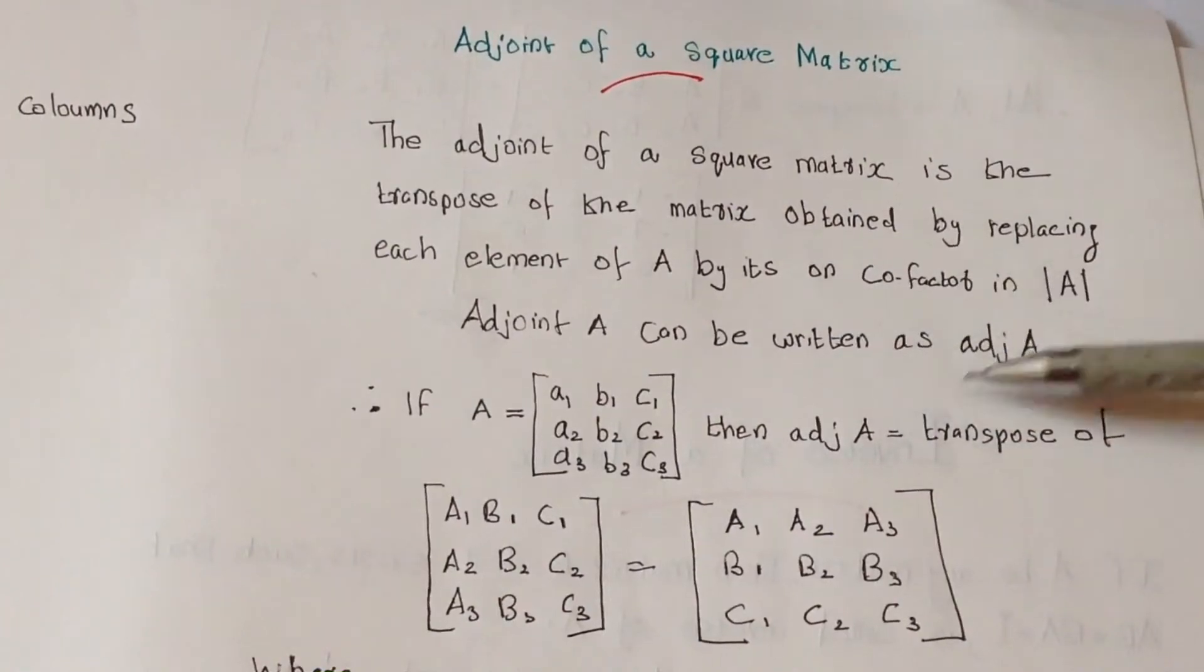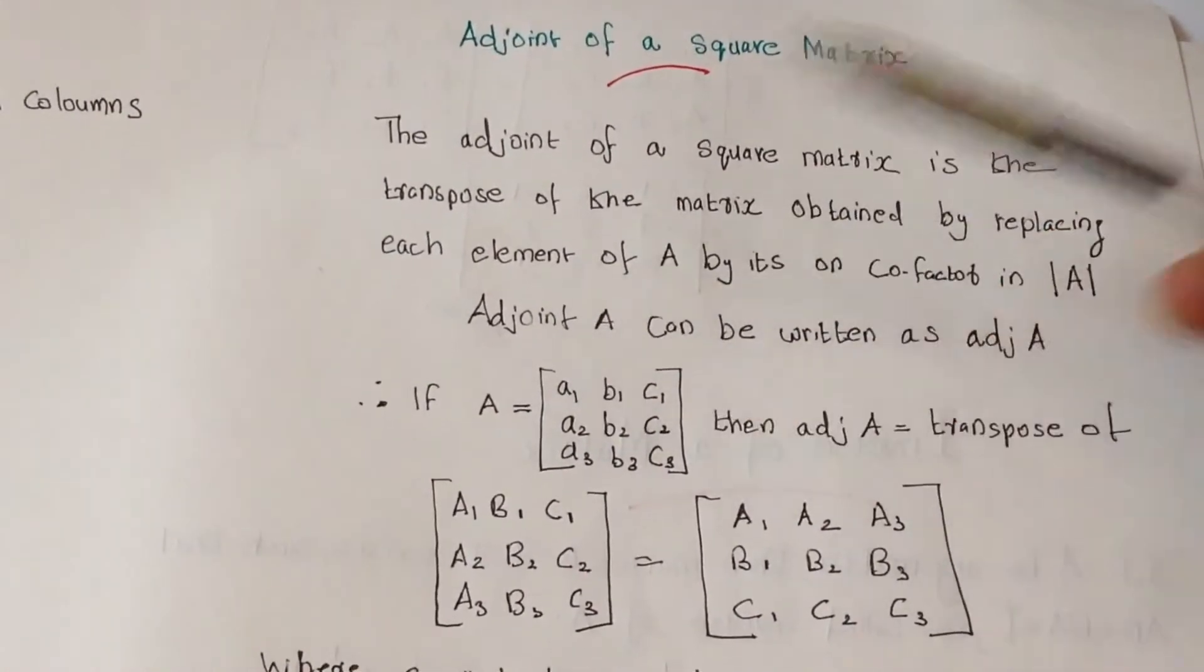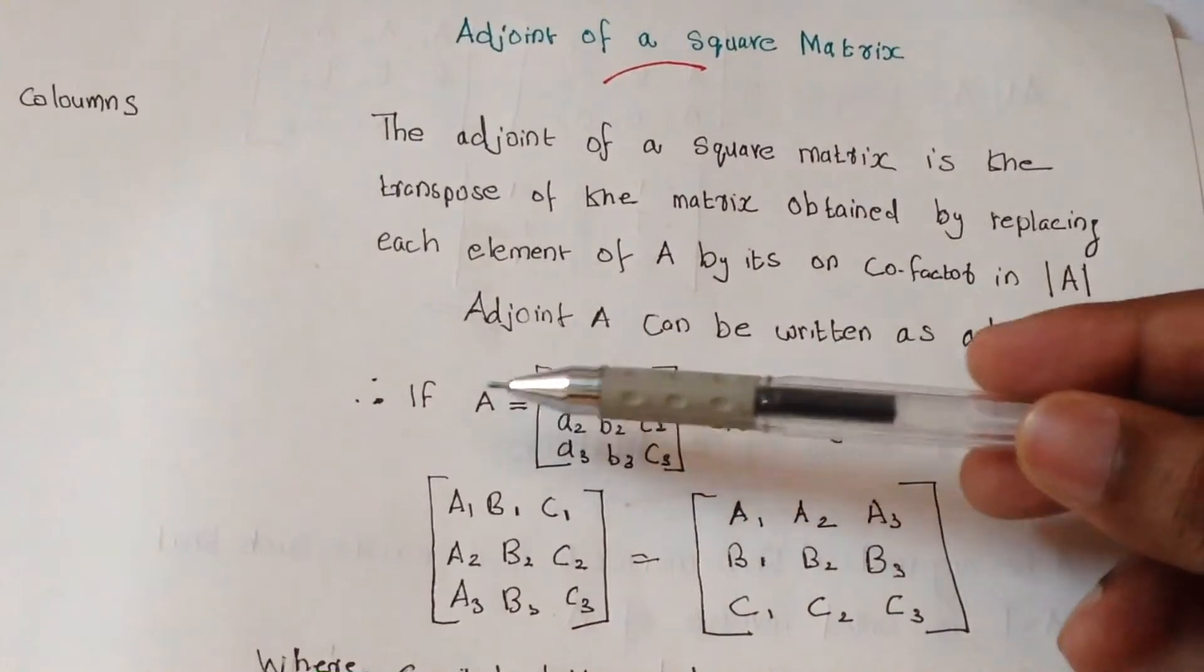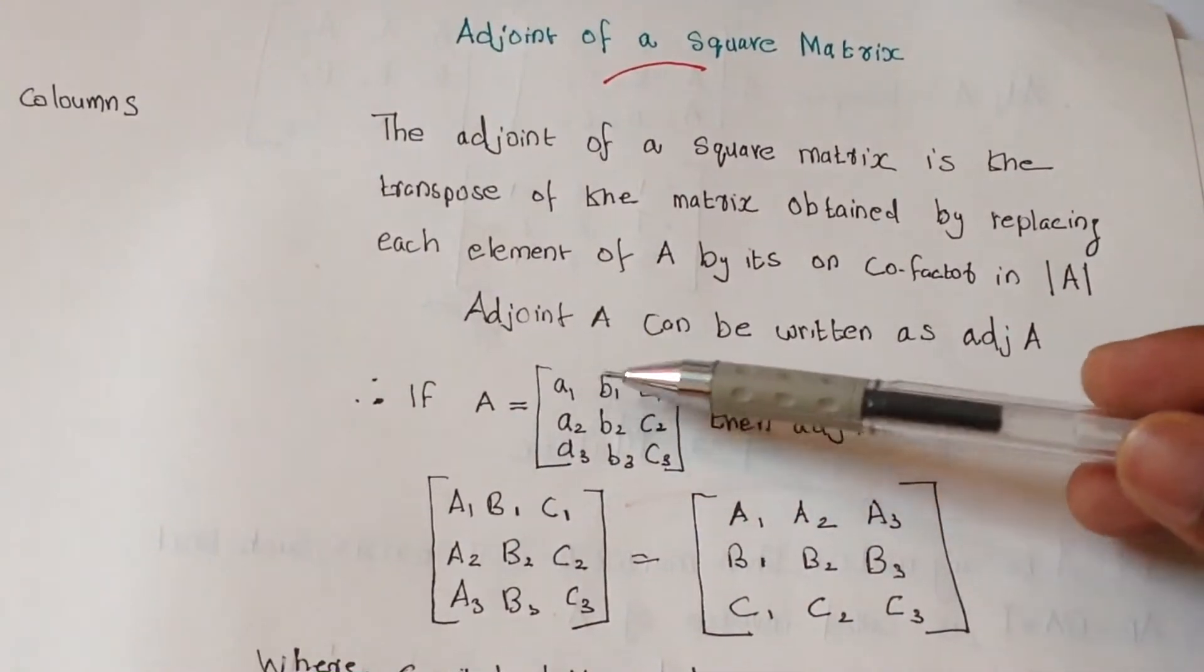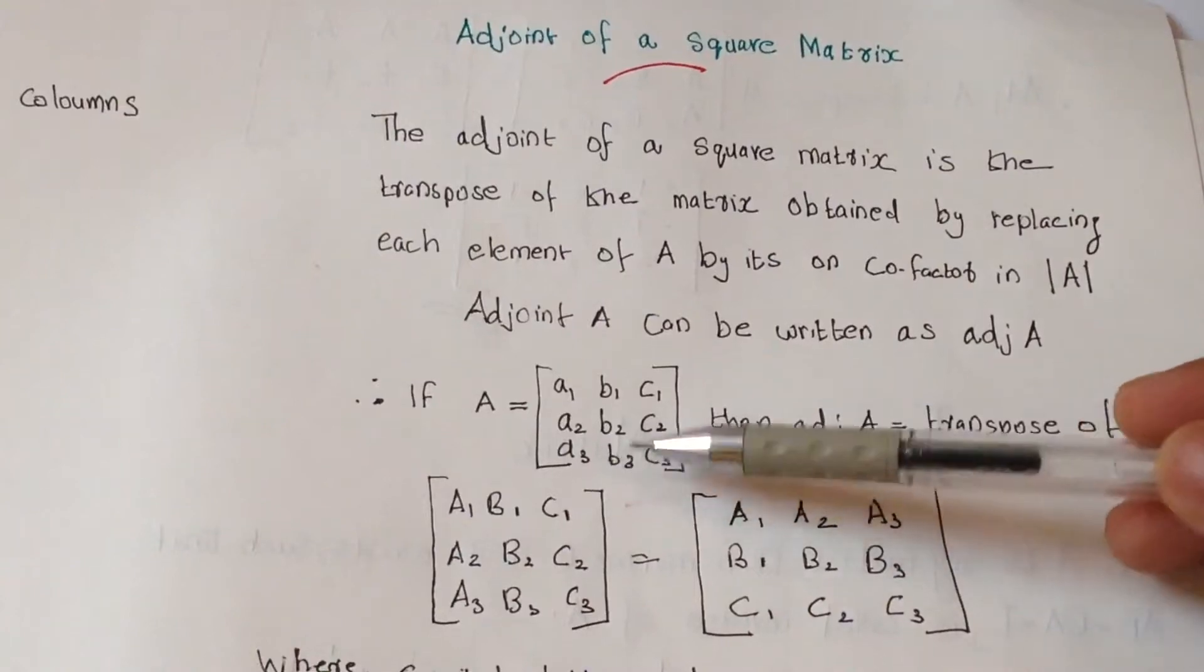Adjoint A can be written as adj A. Let's take an example. If A equals a1 b1 c1, a2 b2 c2, a3 b3 c3,